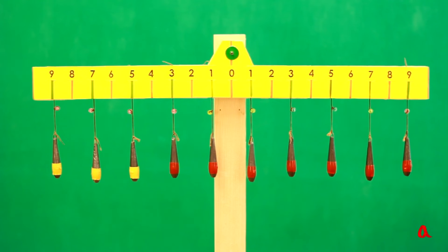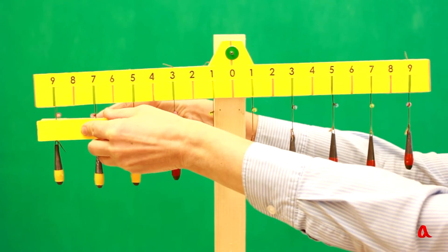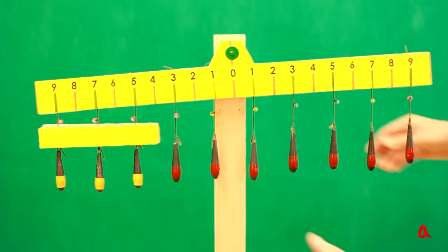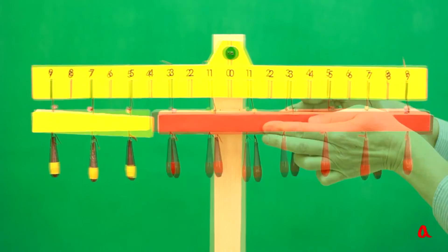There are 10 loads suspended on this lever at equal distance from each other, 3 yellow ones and 7 red ones. Let's gather up the yellow loads into a group with the help of a light plank. Now we do the same with the red ones. The equilibrium still stands.